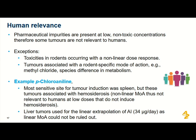Impurities will be present at low, non-toxic concentrations, so some tumours seen in rodent studies aren't relevant to humans. An example is methyl chloride, where there's a species difference in metabolism that won't occur at low, non-toxic concentrations. Another example in the addendum is para-chloroaniline, where the most sensitive tumour site was the spleen, but these tumours are associated with haemosiderosis — a non-linear mechanism of action not relevant to humans at low doses. Therefore, liver tumours were used for the linear extrapolation of the acceptable intake for chloroaniline, giving a more relevant endpoint despite a higher TD50.